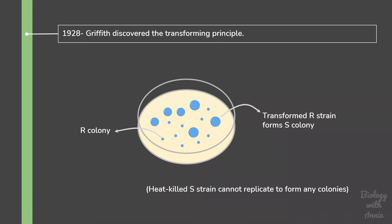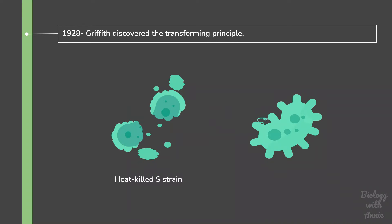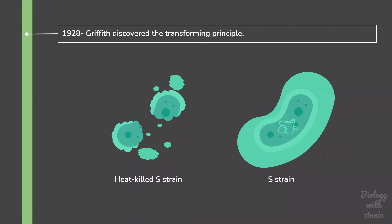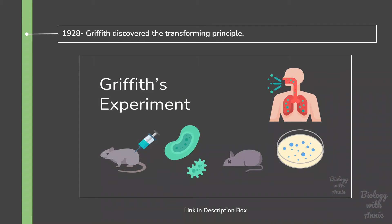Griffith believed that a chemical substance from the heat-killed smooth strain was responsible for this transformation. This chemical substance, also called the transforming principle, was believed to be the genetic material because of its ability to change the trait of the bacteria, and also because it was passed on to all the descendants of the transformed bacteria. If you want to know Griffith's experiment in detail, you can check out my previous video — I will leave a link in the description box.